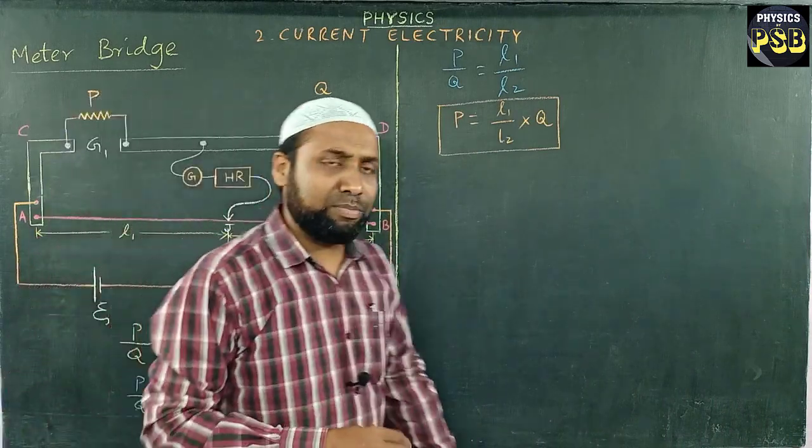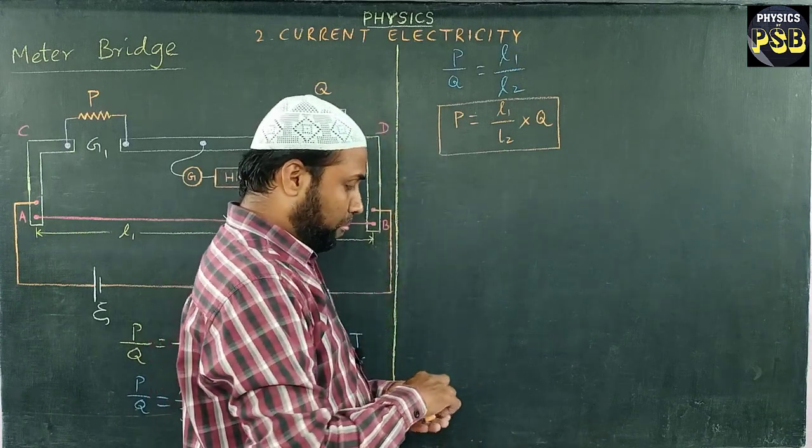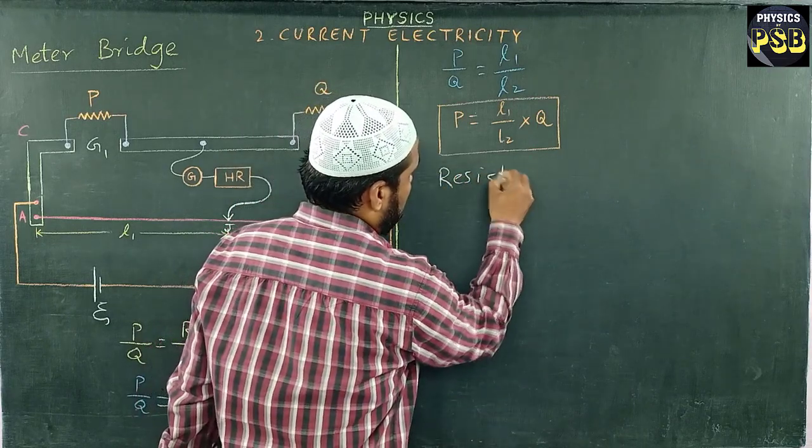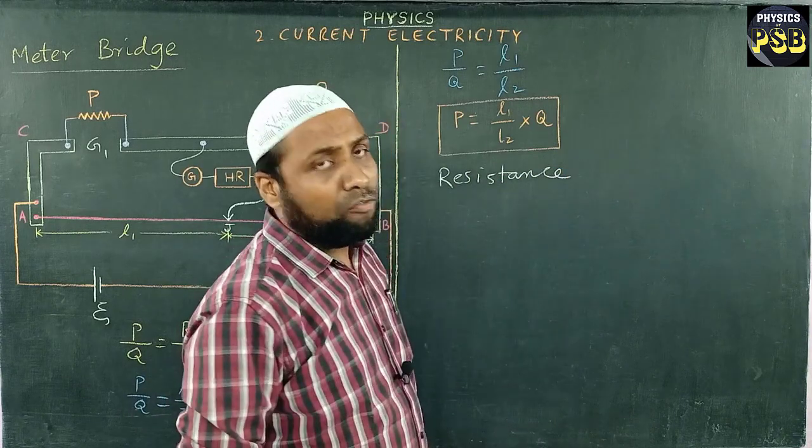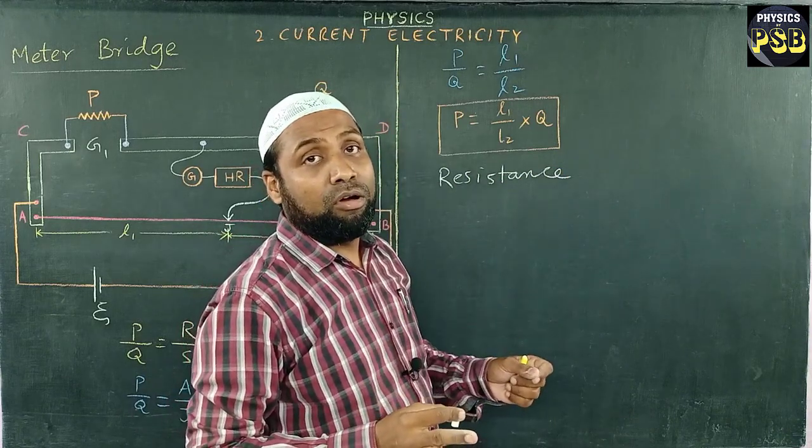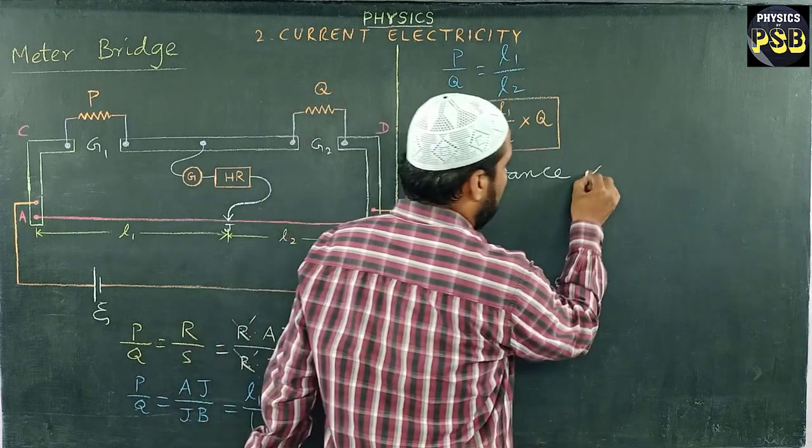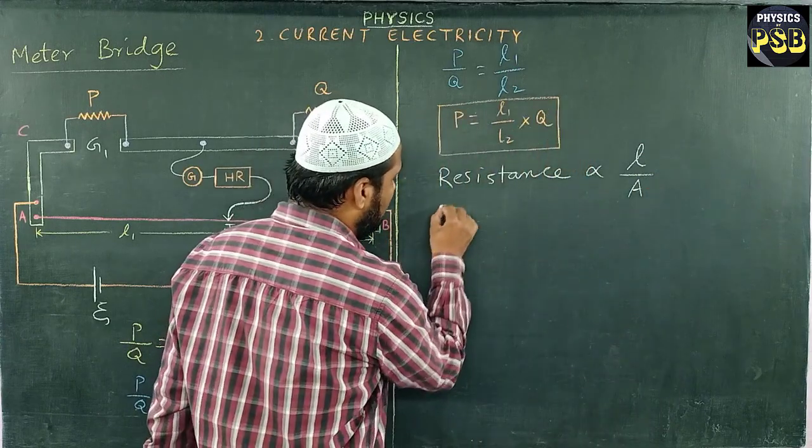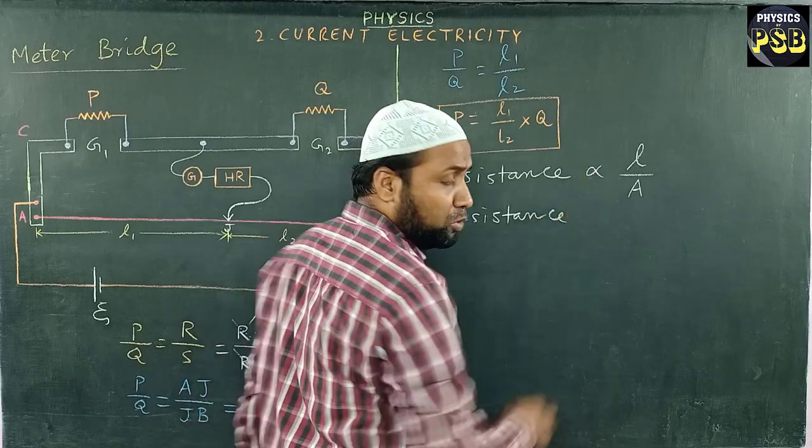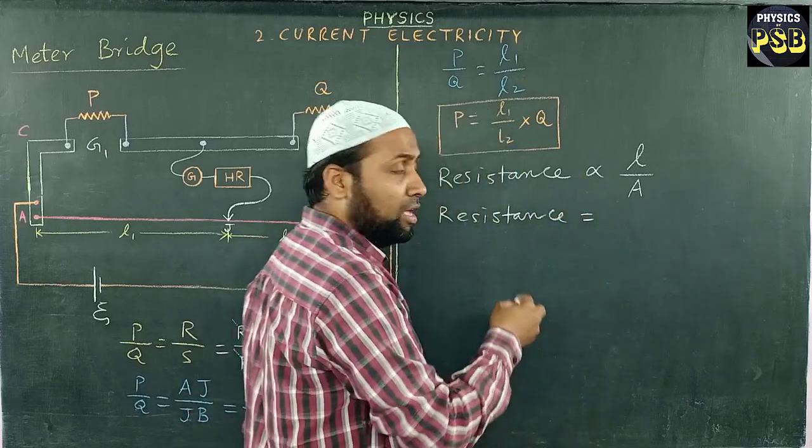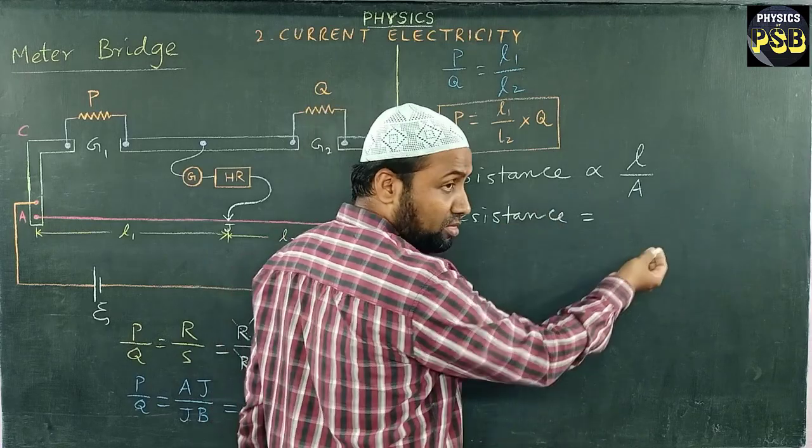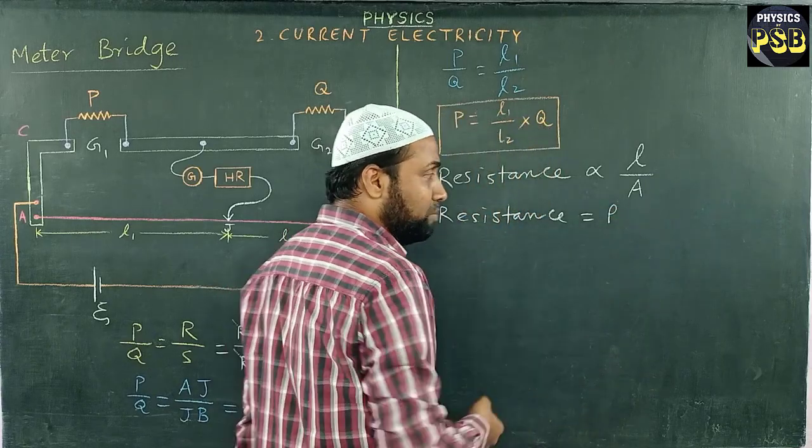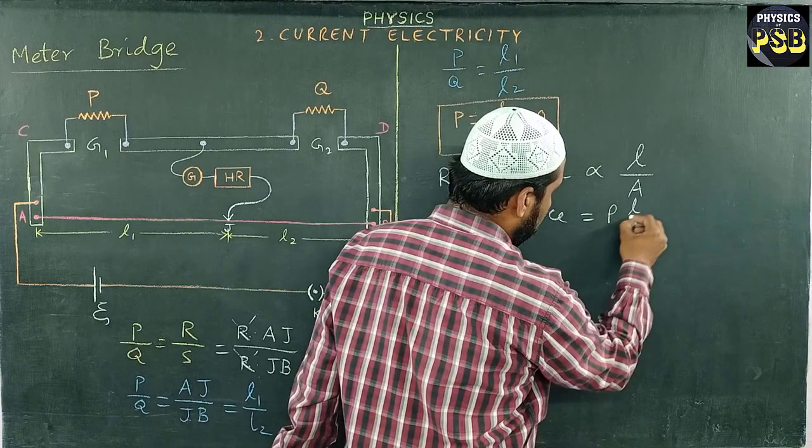Now I will get the expression for resistivity. We know resistance offered to the flow of current by any conductor is directly proportional to length of the conductor and inversely proportional to the area of cross section. If I remove this proportionality, I need to include an equal sign with a constant. The constant is rho. We call this the proportionality constant. So R equals rho L upon A.